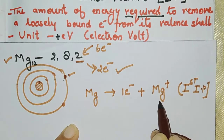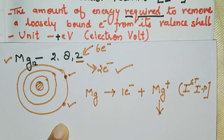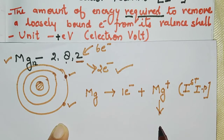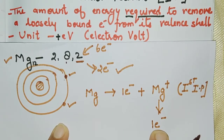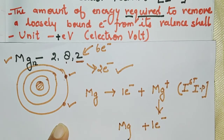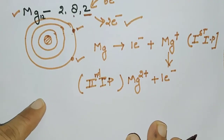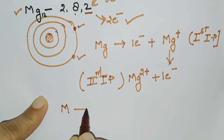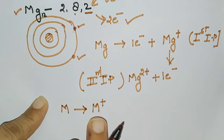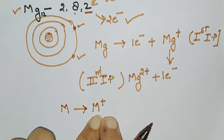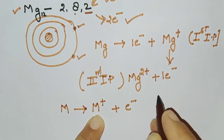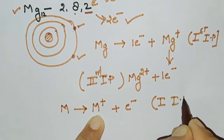Because magnesium can give 2 electrons, when it gives the first electron it becomes Mg+ — the energy absorbed is first ionization potential. Then Mg+ gives one more electron to become Mg2+, to satisfy the octet rule. When any metal converts into a positive ion by losing its electron, the energy absorbed is called ionization potential.